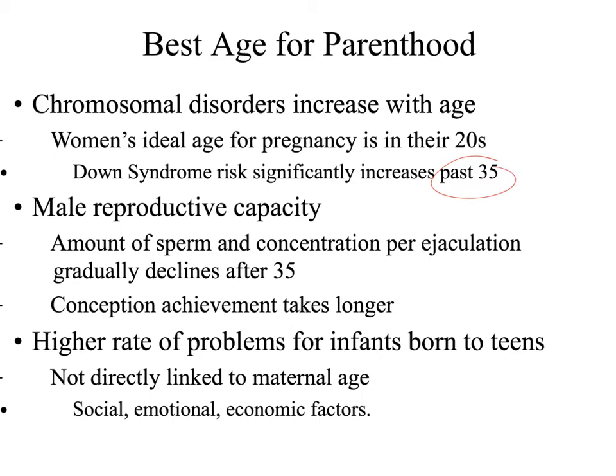It's not to say that a woman older than 35 will give birth to a child with Down syndrome, but the chances do increase the older we get. As for male reproductive capacity, we find that the amount of sperm and concentration will also decline after the age of 35, though it is not as noticeable in men as in women. On average, older men may take a little longer to conceive a child, and we see individuals who, even into their 70s, can still impregnate women — whereas women who have passed menopause would not be able to conceive despite still being sexually active.